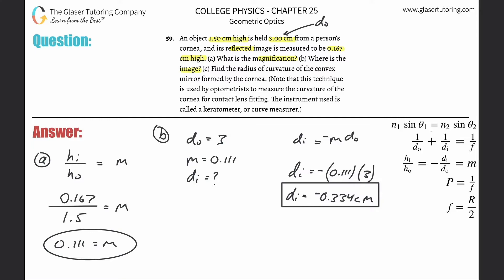If you need it in meters, you can do your conversions. So where is the image? The negative sign implies that it is behind. This is reflected, so we're really talking about the lens acting as a mirror. The person's cornea is not a mirror per se, but they're saying reflected, so they're talking about a mirror. The negative sign tells us it's behind the mirror, or behind the cornea.